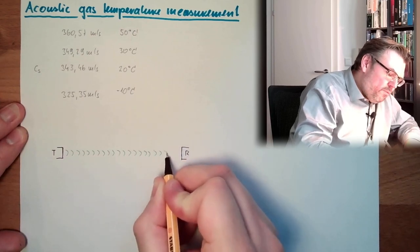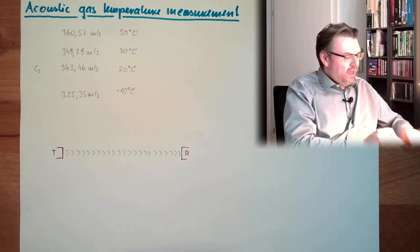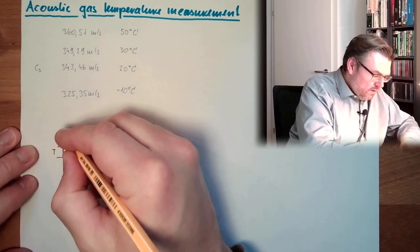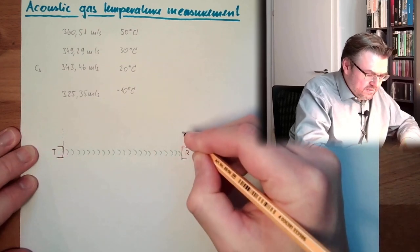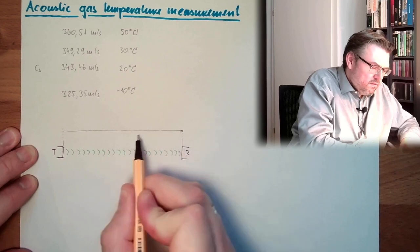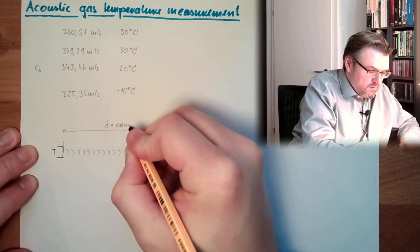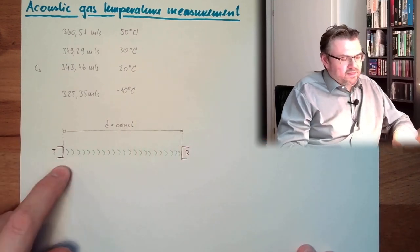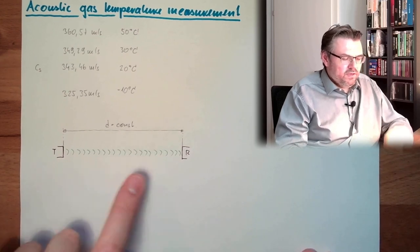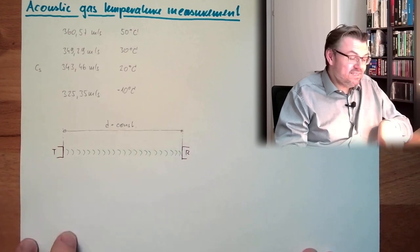We know exactly when we issued the sound. We measure exactly when we received the sound. And since we have mounted this in a certain way, here, this distance is known exactly. And it's constant. The difference, or the measured time, is reflecting not only the distance.